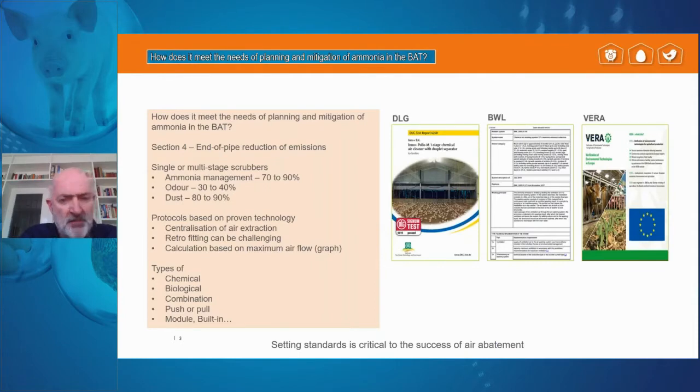These rules and regulations that are set down, or protocol, as it were, are very much based on proven and tested methods. And on the right, I've kind of listed three organisations, the DLG in Germany, BWL in the Netherlands, and the more internationally recognised Vera organisation, where air abatement systems can be tested and proven against the protocols that are laid down. In principle, what is normally suggested is that we are cleaning air from a centralized point of extraction. Obviously, that is the most convenient thing to do. In other words, if we're pointing the air in a certain place, we can then target the air abatement there. When we look at existing buildings, obviously, some of the challenges we may face where, for example, the extraction is along the top of the roof, retrofitting these systems can be a challenge. But saying that it is possible and we do that on a regular basis.